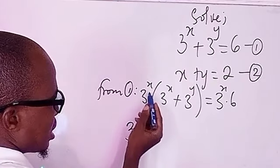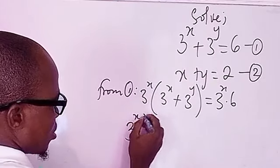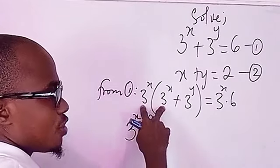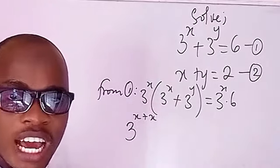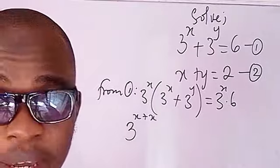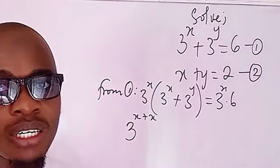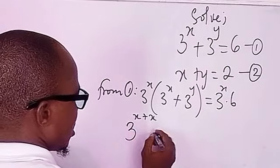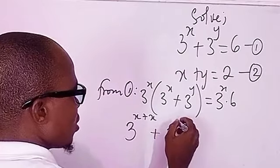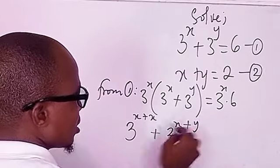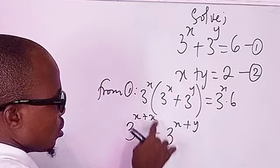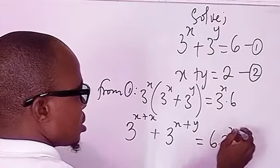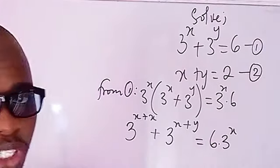Now let's see what this gives us. When you multiply three to the power of x by three to the power of x, you get three to the power of two x, because from the law of indices, when multiplying numbers with the same base, the powers are added. And for the other term, we get three to the power of x plus y, and the right side becomes six times three to the power of x.